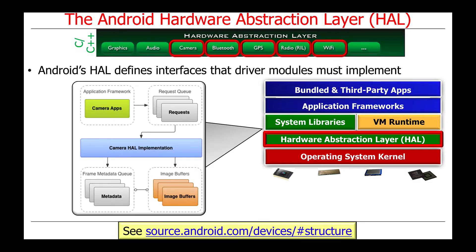Android's hardware abstraction layer defines a set of interfaces that driver modules must implement. As you can see here, there are a number of different parts of these interfaces. There are interfaces that provide an upward-facing perspective for how the application framework sends requests down to the HAL, and there are also internal implementations of these interfaces used to manage various resources necessary for any given hardware abstraction capability, such as abstracting away from camera implementations with respect to image buffers and various types of metadata describing pictures and videos.